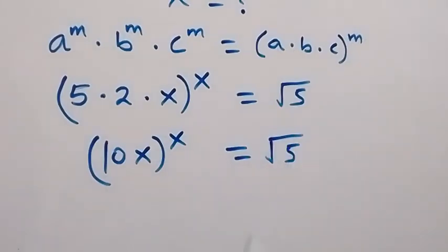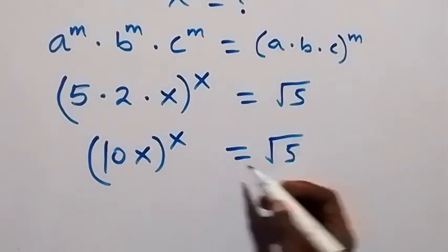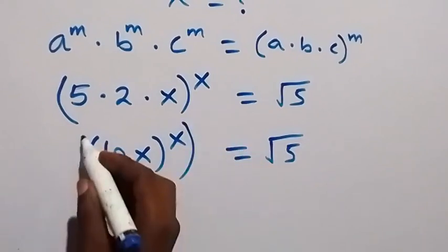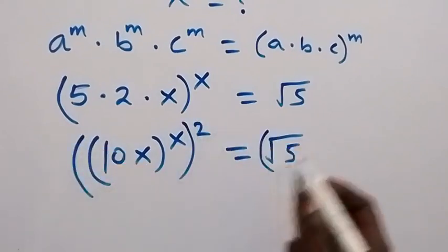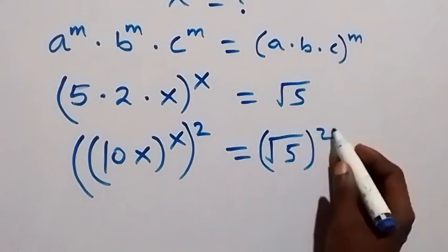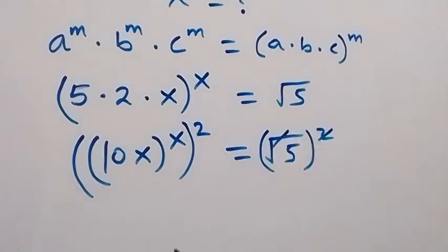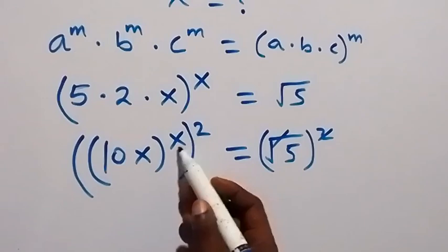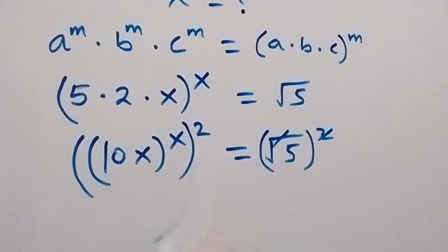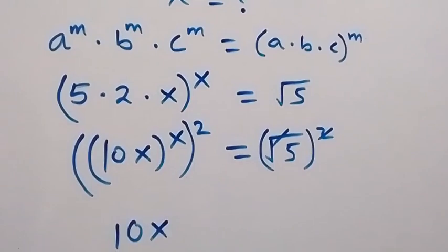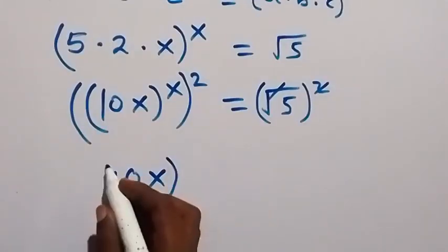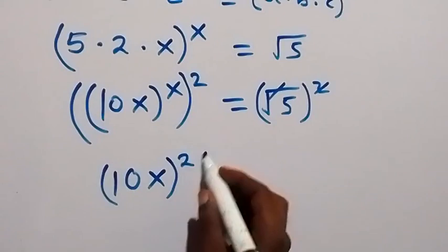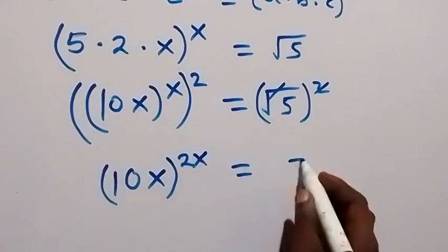Then let's square both sides to get rid of the square root. So we square both sides — square cancels square root here. This power multiplies and gives us 10x raised to power 2x equals to 5.